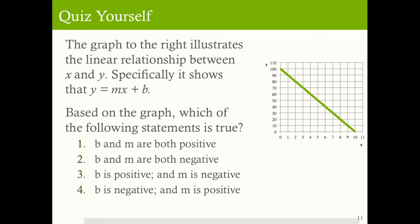Let's do one more quiz yourself before moving on. The graph to the right illustrates a linear relationship between x and y: y equals mx plus b. Based on this graph, which of the following is true: b and m are both positive; b and m are both negative; b is positive and m is negative; or b is negative and m is positive? Pause the video and try to answer. Looking at the graph, the vertical intercept b is positive — it's 100 — and the slope m is negative because the curve is downward sloping.